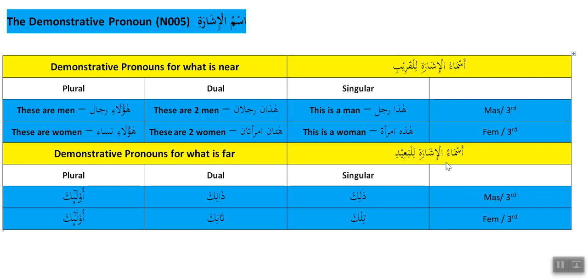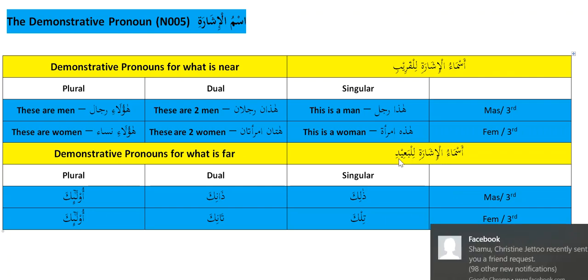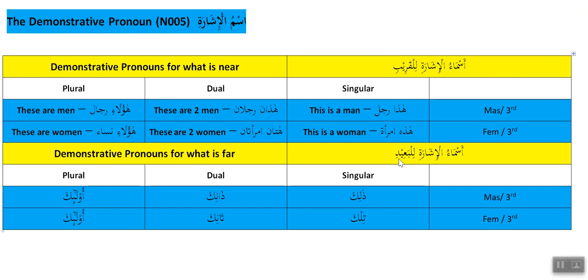'Asma'ul ishara lil-ba'id' — the demonstrative pronouns for what is far. Singular masculine would be 'thalika.' So we'll say 'thalika rajulun.'